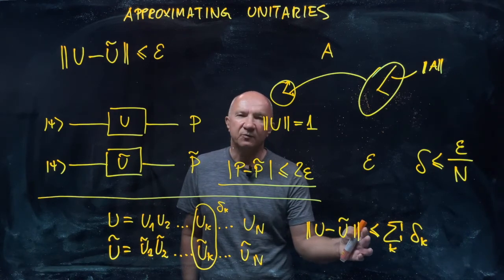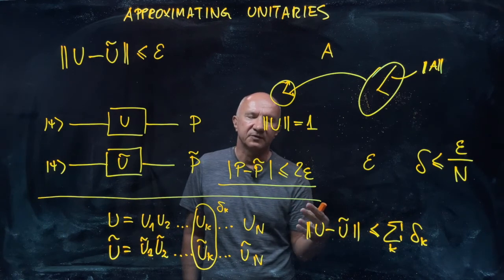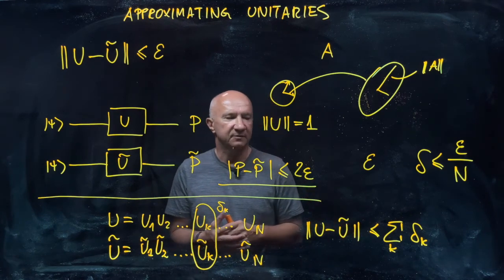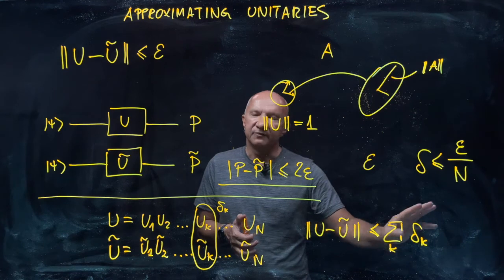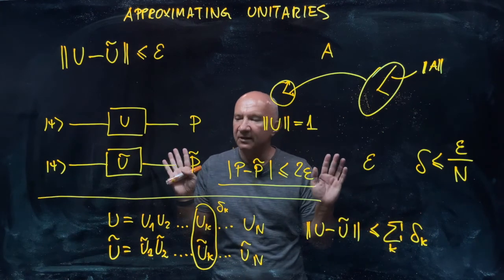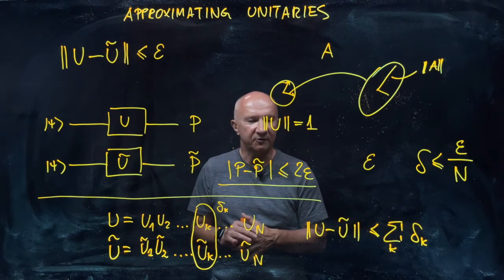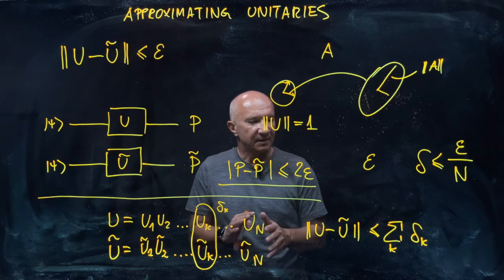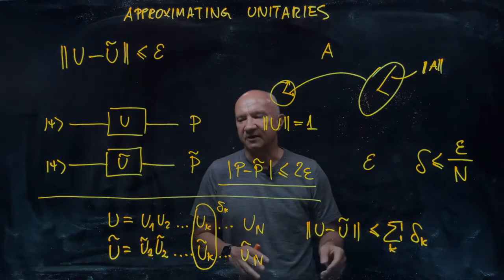Then for some other operators, it could be much worse. So the scaling of errors could just be even exponential. So it's somehow with unitaries we are okay and the errors grow nicely in the linear fashion.